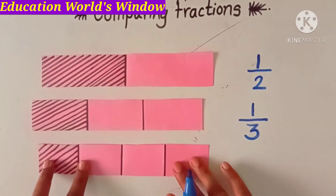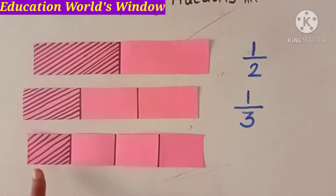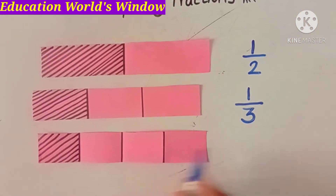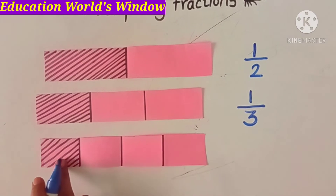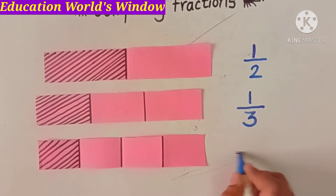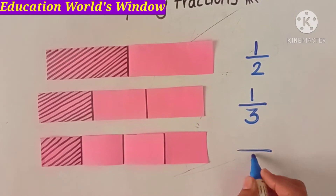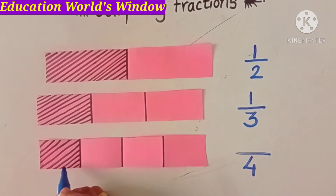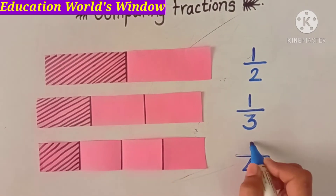This strip is divided into 4 parts: 1, 2, 3, 4. The colored part is 1. So the fraction for this strip is 1 upon 4.